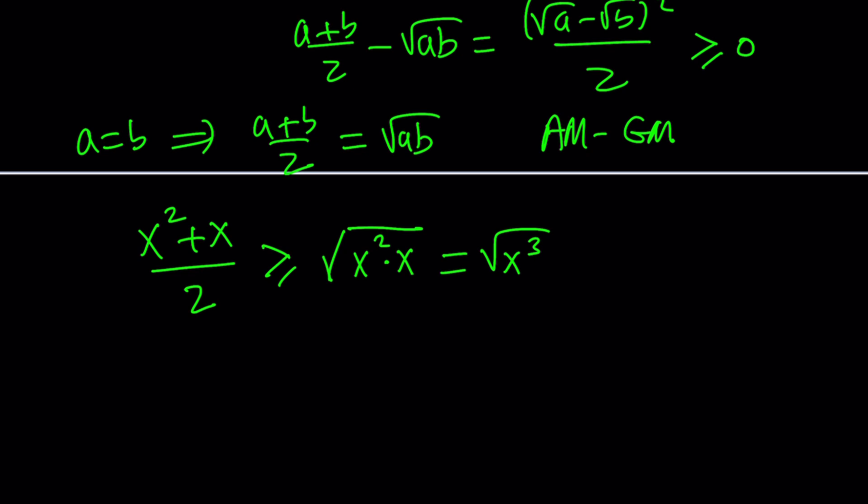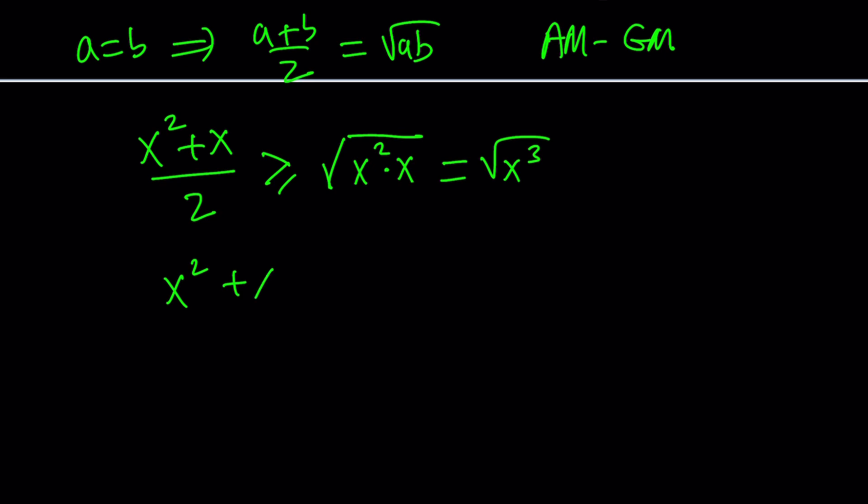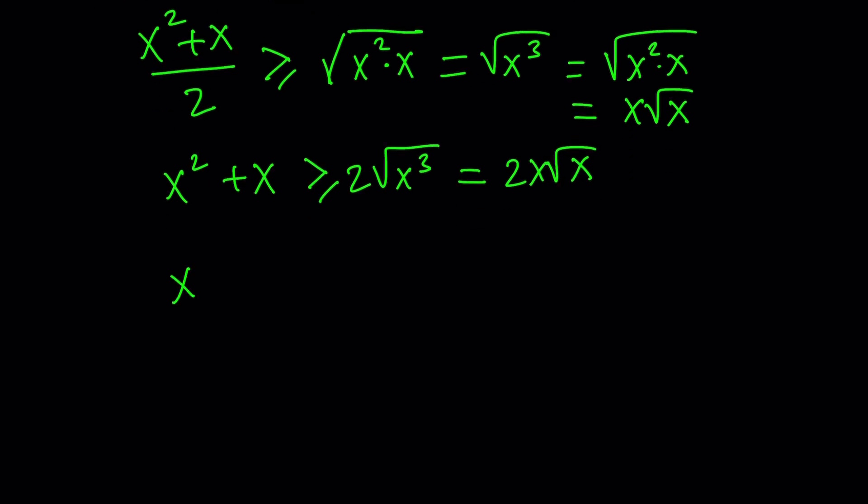Notice that square root of X cubed can be written as square root of X squared times X, which can be written as X times the square root of X. So we can write this as 2X root of X. In other words, we know that X squared plus X is always greater than or equal to 2X square root of X when X is greater than or equal to 0.